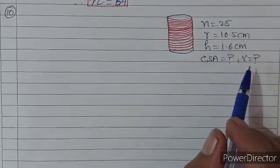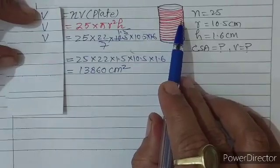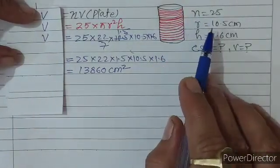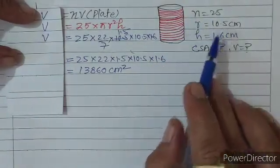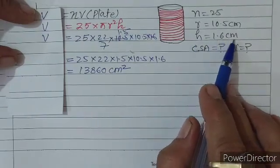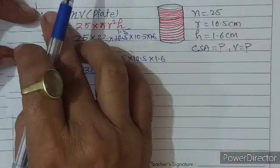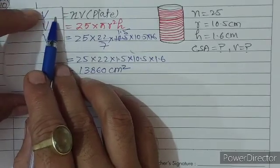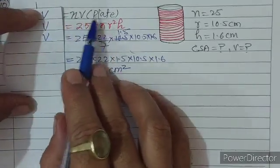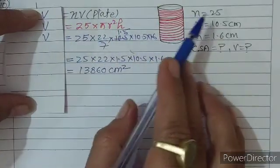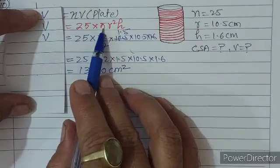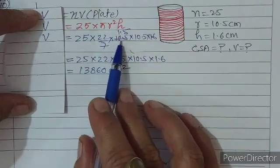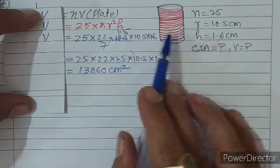CSA और volume निकालना है। Volume of cylinder = n × volume of one plate = 25 × π r² h। Value रखेंगे: 25 × (22/7) × 10.5 × 10.5 × 1.6। 7 से 10.5 को cut करने पर 1.5 आएगा। कुल मिलाकर: 25 × 22 × 1.5 × 10.5 × 1.6।